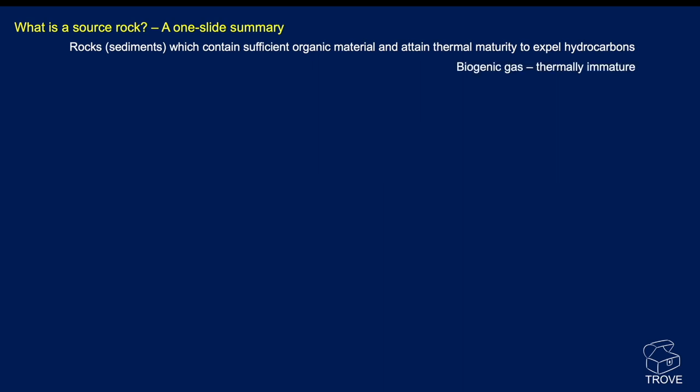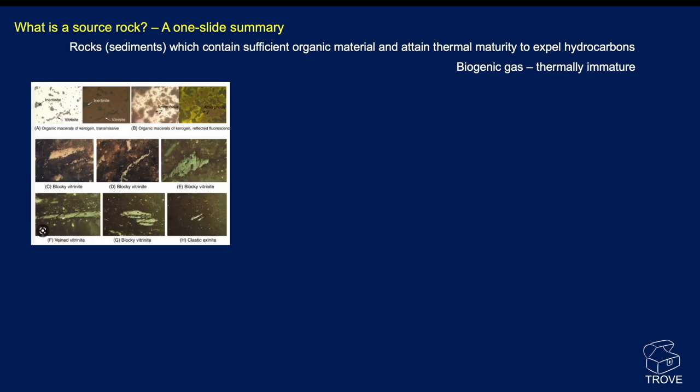One great exception is biogenic gas, which doesn't actually have to attain thermal maturity — it can generate gas whilst thermally immature. Within the source rock, we have all the macerals — the minerals of organic matter. So we have pictures of inertinite, vitrinite, both collinite and telinite, amorphous organic material, and classic exinite. These are the various constituents of organic material in a source rock, and it doesn't include the spores, algae, and other types of material that we might find.